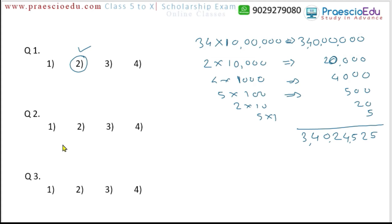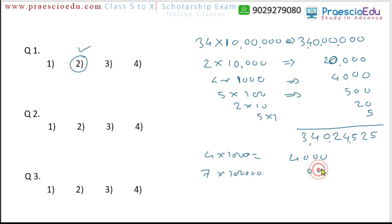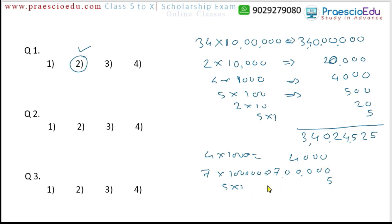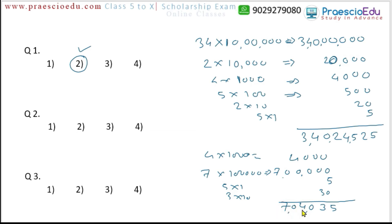Question number 2: Which number is obtained by the expanded form? 4 × 1,000 = 4,000. Then 5 × 1 = 5 at the unit place. Then 3 × 10 = 30. We have to add all: 5, 3, 0, 4, 0, 7 — means 7,4035. So this is available in option number 2.